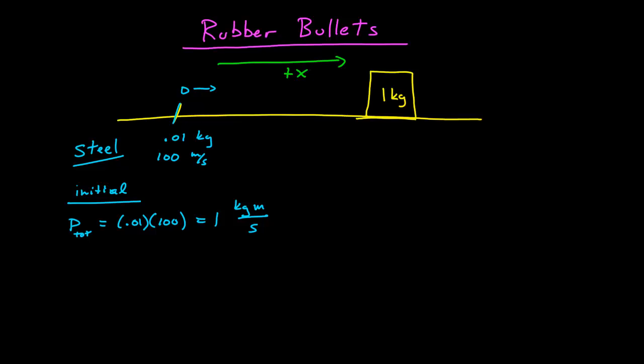And so, what happens when the steel bullet hits the block? We have to assume something. It could pass all the way through, but let's say it doesn't, and it sticks in the block. So that's certainly a reasonable outcome for the steel bullet. So if it sticks to the block, what do we have after the collision?